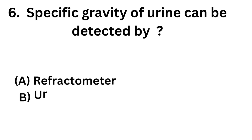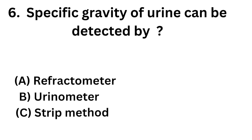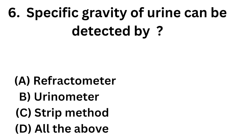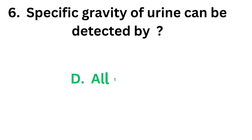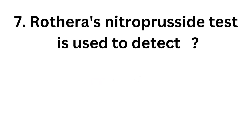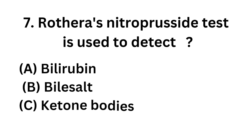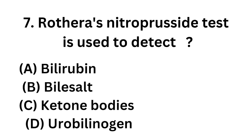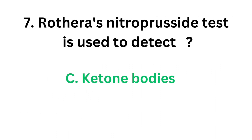Question number six: specific gravity of urine can be detected by — option A: refractometer, option B: urinometer, option C: strip method, option D: all of the above. Refractometer, urinometer, and strip method can all be used for detecting specific gravity, so the correct answer is option D, all of the above.